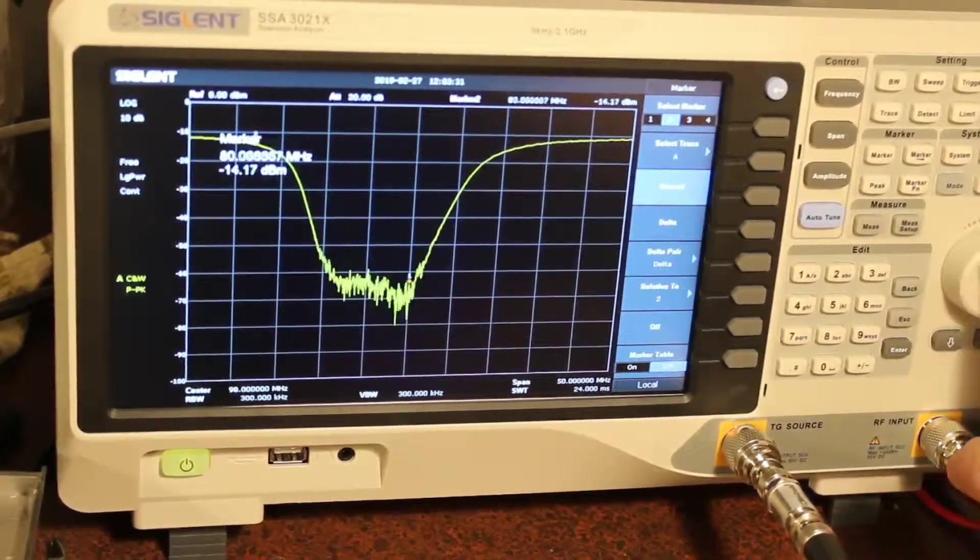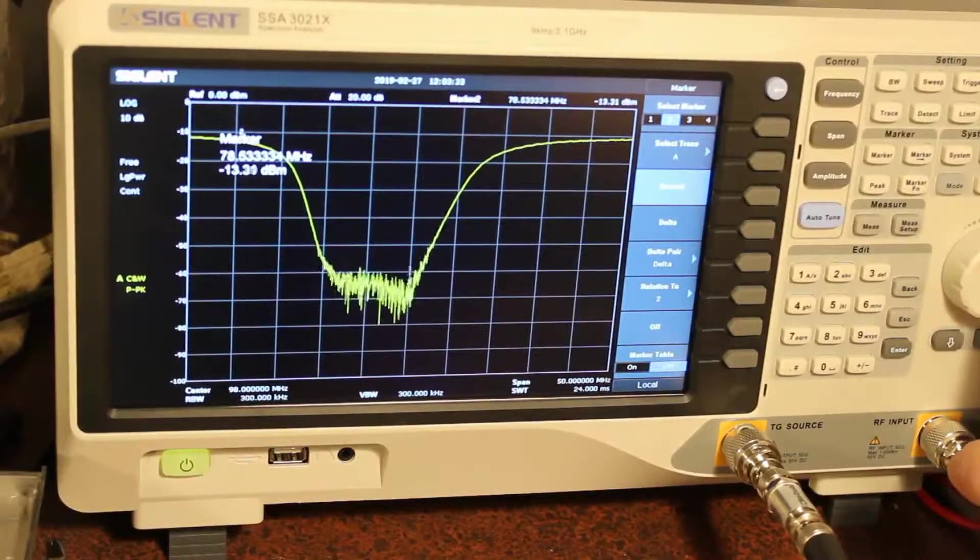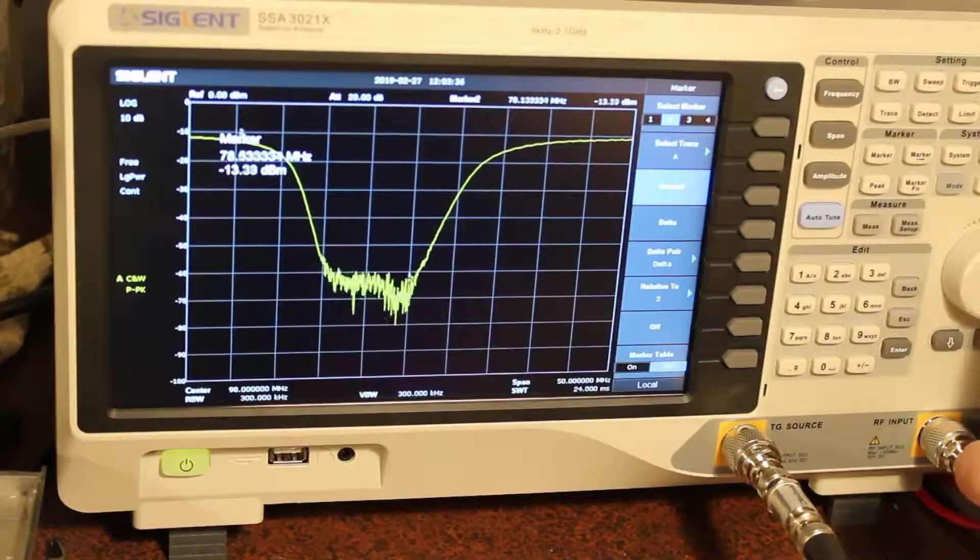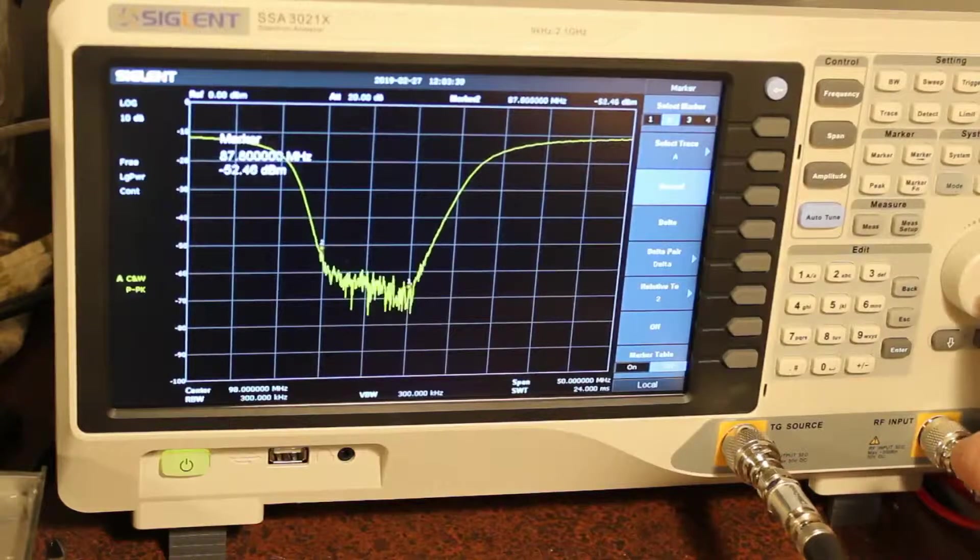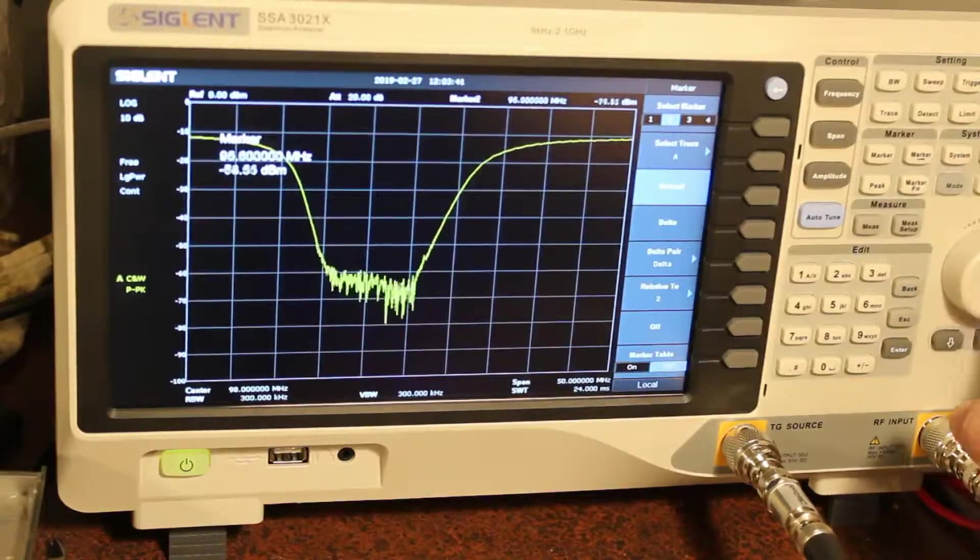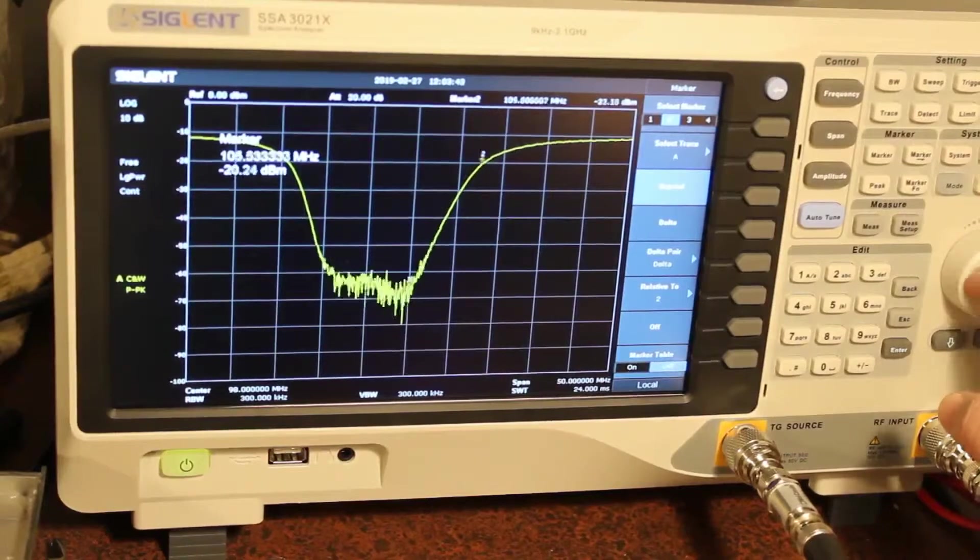It really starts to have real characteristics up around 78 dB. And that's where you're at, you're about your 3 dB point. Again, remembering that we've got a 10 dB attenuator in there, so take 10 off.